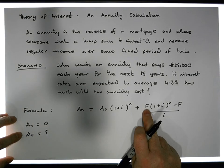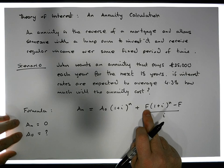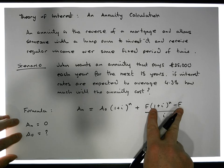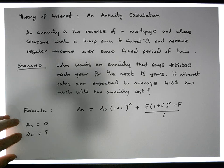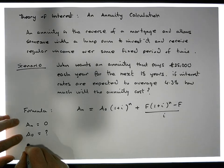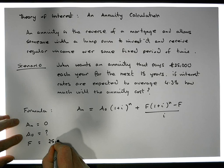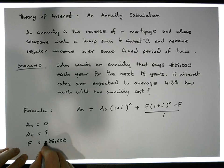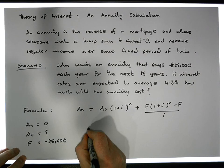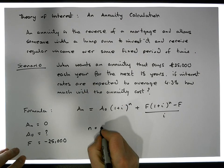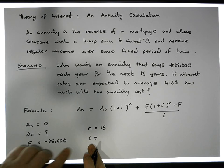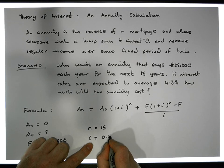F is the regular withdrawal from the account — in this case it's going to be €25,000. N is the number of years; it should be paid over 15 years, so N equals 15. And i is the interest rate; the prevailing interest rate in this situation is 4.3%, so i equals 0.043.